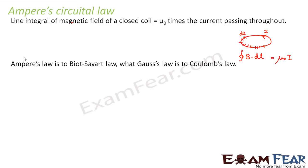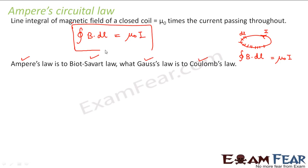Ampere's law is equivalent to Gauss's law, just like Biot-Savart's law is equivalent to Coulomb's law. Using Coulomb's law you can calculate electric field at any point; similarly using Biot-Savart's law you can calculate magnetic field at any point due to a current-carrying conductor of any shape. But if you apply Ampere's law, that makes your calculations easier — that is the main advantage of the Amperian loop approach.